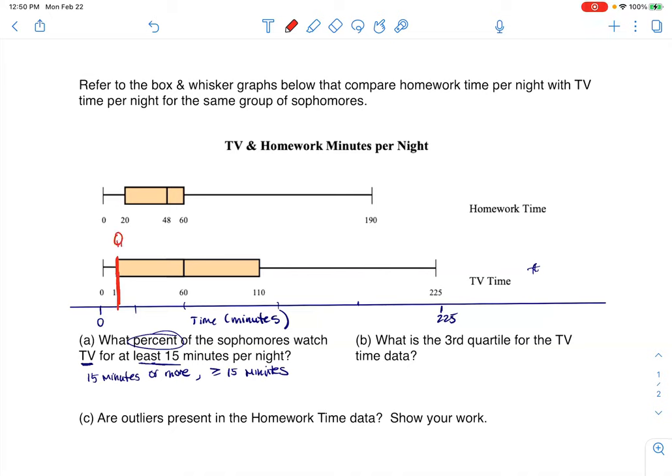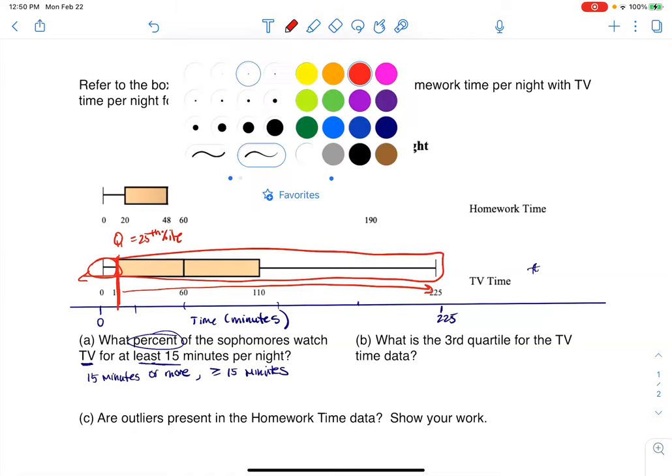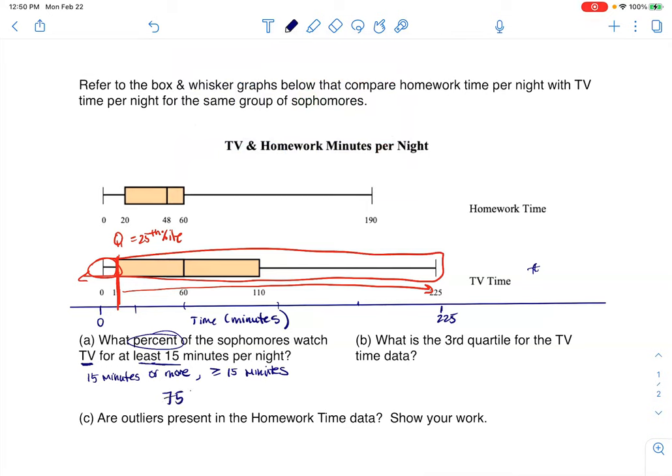There it is. I know I wrote over the five there, but this is Q1, right? And that is the 25th percentile. What that means is 25% of sophomores watch TV for 15 minutes or fewer in a day, and that's not quite what we're being asked. We want 15 minutes or more, we want to go this direction. And if this takes care of 25% of your data, then the rest of the chunk in here must be 75% of your data. So the answer to this problem is 75%. So 75% of sophomores watch TV for at least 15 minutes a night because there was 25% in this quarter, 25% in this quarter, and 25% in this quarter, because that's what a box plot does. It splits you up into quarters.